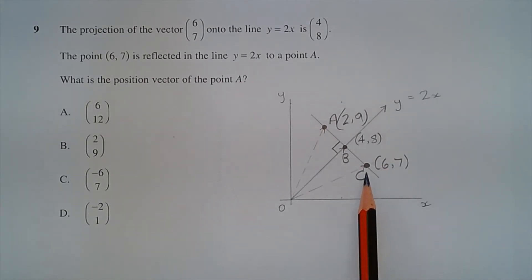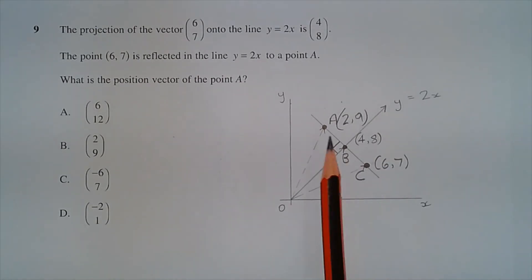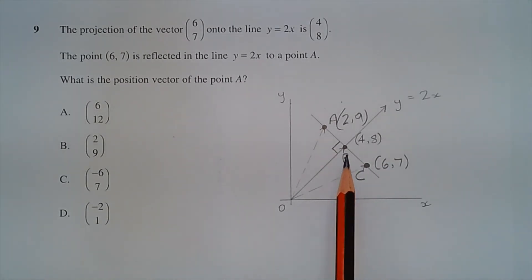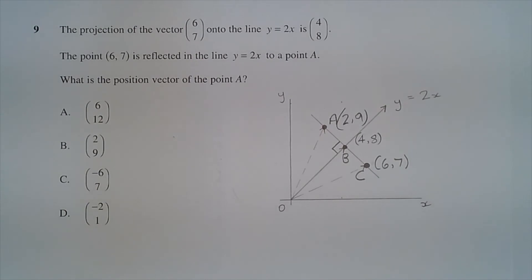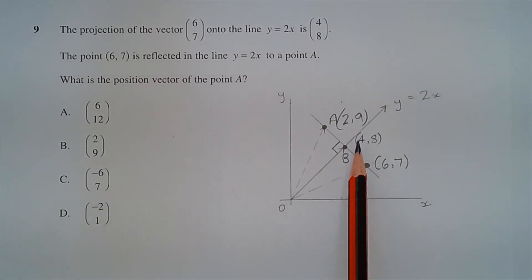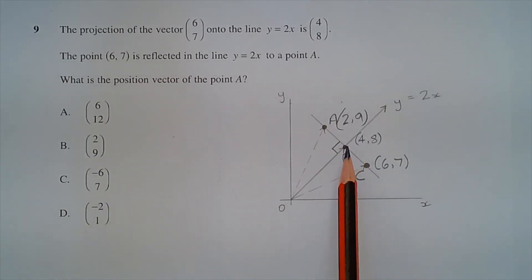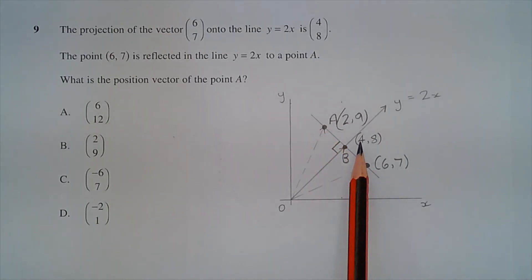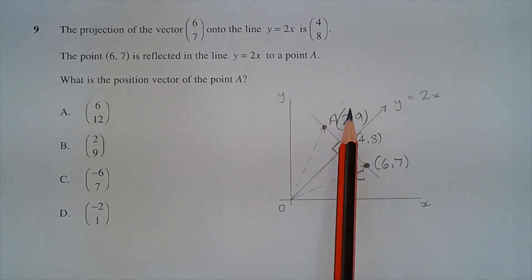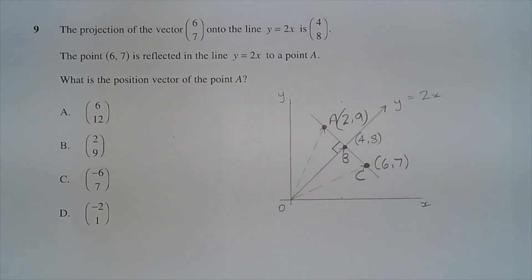The x coordinate of point C is 6 and the x coordinate of point B is 4. 6 minus 4 is 2, so the horizontal distance from C to B is 2 units. Subtracting 2 from 4 equals 2, meaning the horizontal distance from point B to point A is also 2 units. So 4 minus 2 is 2, giving the x coordinate of point A as 2.